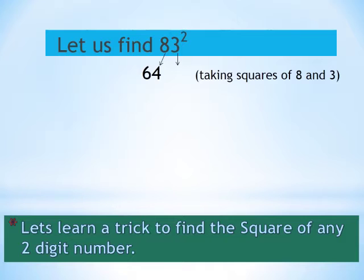Here we must write the square in 2 digits. So the square of 3 is written as 09.